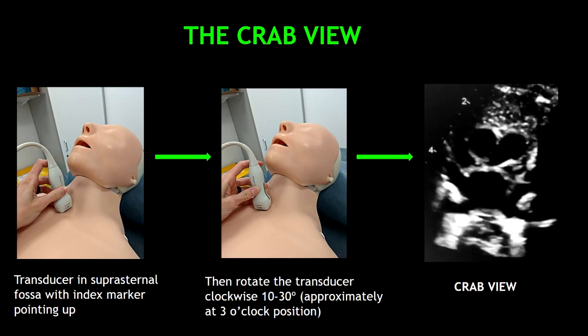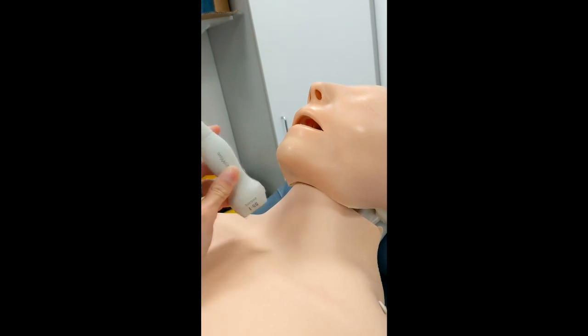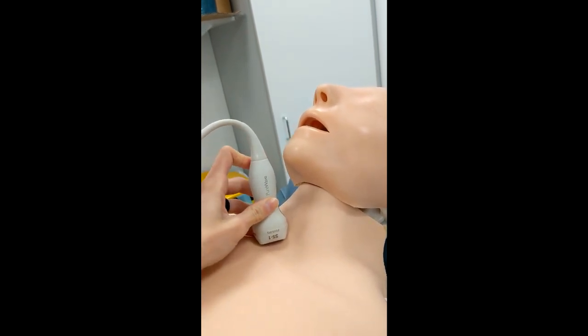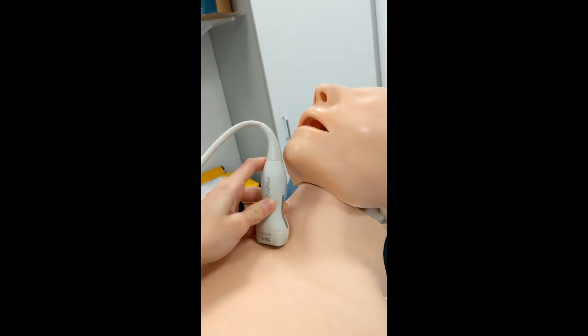However, remember that this view is often used in pediatric echocardiography and is very difficult to obtain in adults. Now I'm going to demonstrate how to get the CRAB view in a video. Place the transducer in the suprasternal fossa and rotate the probe clockwise 10 to 30 degrees.